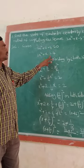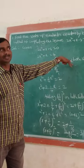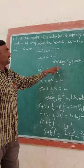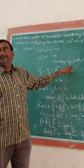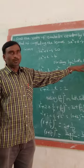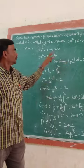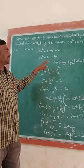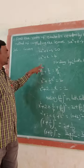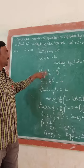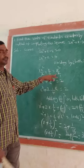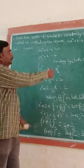First, move -4 to the right side: 2x² + x = 4. Then, dividing both sides by 2, we get 2x² divided by 2 plus x divided by 2 is equal to 4 divided by 2.